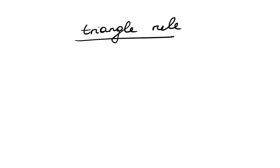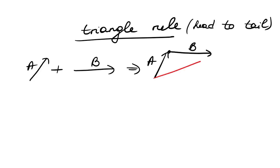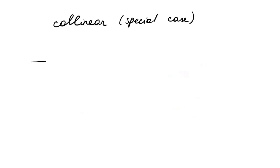The second one is the triangle rule. In this example we add vector a to b — head to tail. The first way is connecting the tail of b to the head of a, then drawing a straight line from tail to head. The second way is connecting the tail of a to the head of b, then drawing a straight line from tail to head. As you can see, both resultant vectors are equal in terms of direction and magnitude.